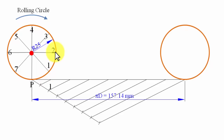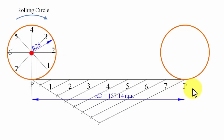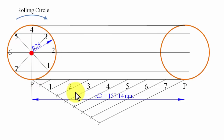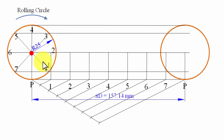Label the division points on the baseline as 1 through 7, with the final point at B. Draw horizontal lines from points 1, 2, 3, 4, 5, 6, and 7. Project these division points vertically upward to locate the successive center positions. Label these C0 (the initial center), C1, C2, and so on up to C8.